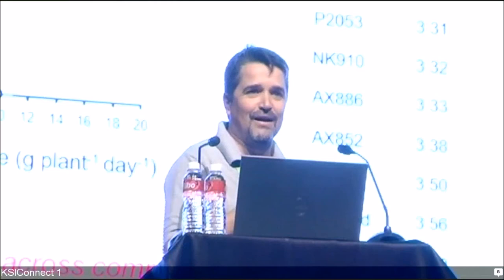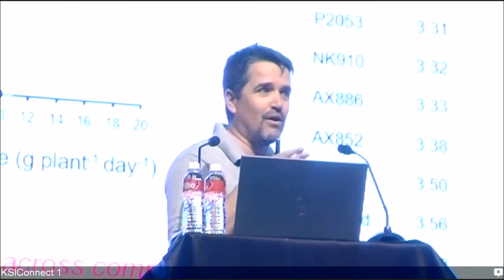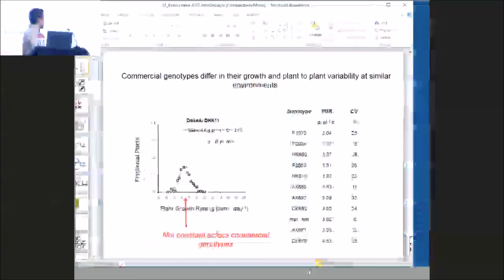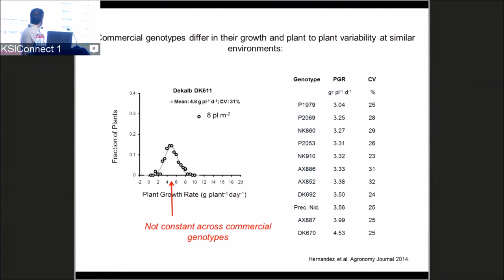In experiments with multiple commercial genotypes, not all genotypes grow at the same rate in a particular environment, and not all are equally uniform. This is an example from a study with commercial genotypes from the central region of Argentina grown in the same environment — some canopies are intrinsically more uniform and some are intrinsically more variable.